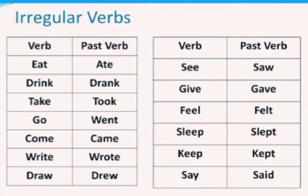Here you can see examples of irregular verbs: eat/ate, drink/drank, take/took, go/went, come/came, write/wrote, draw/drew, see/saw, give/gave, feel/felt, sleep/slept, keep/kept, say/said.